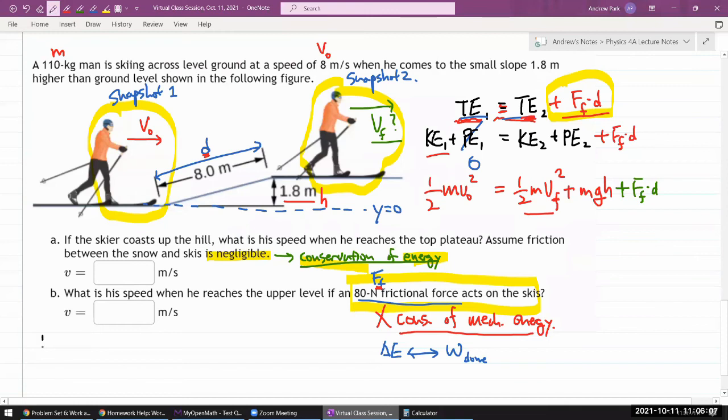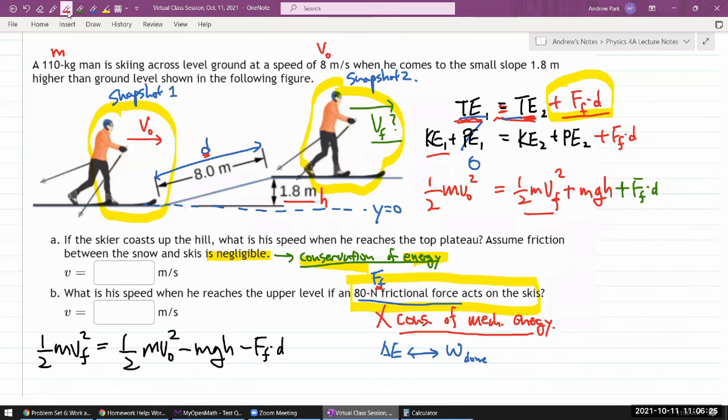So let me first solve for one half m v final. I'm going to write it down here. One half m v final squared is equal to collect everything else on the other side. One half m v naught squared minus mgh minus friction force times displacement. Now I can say, take all of this, multiply 2 over m, and then take the square root.